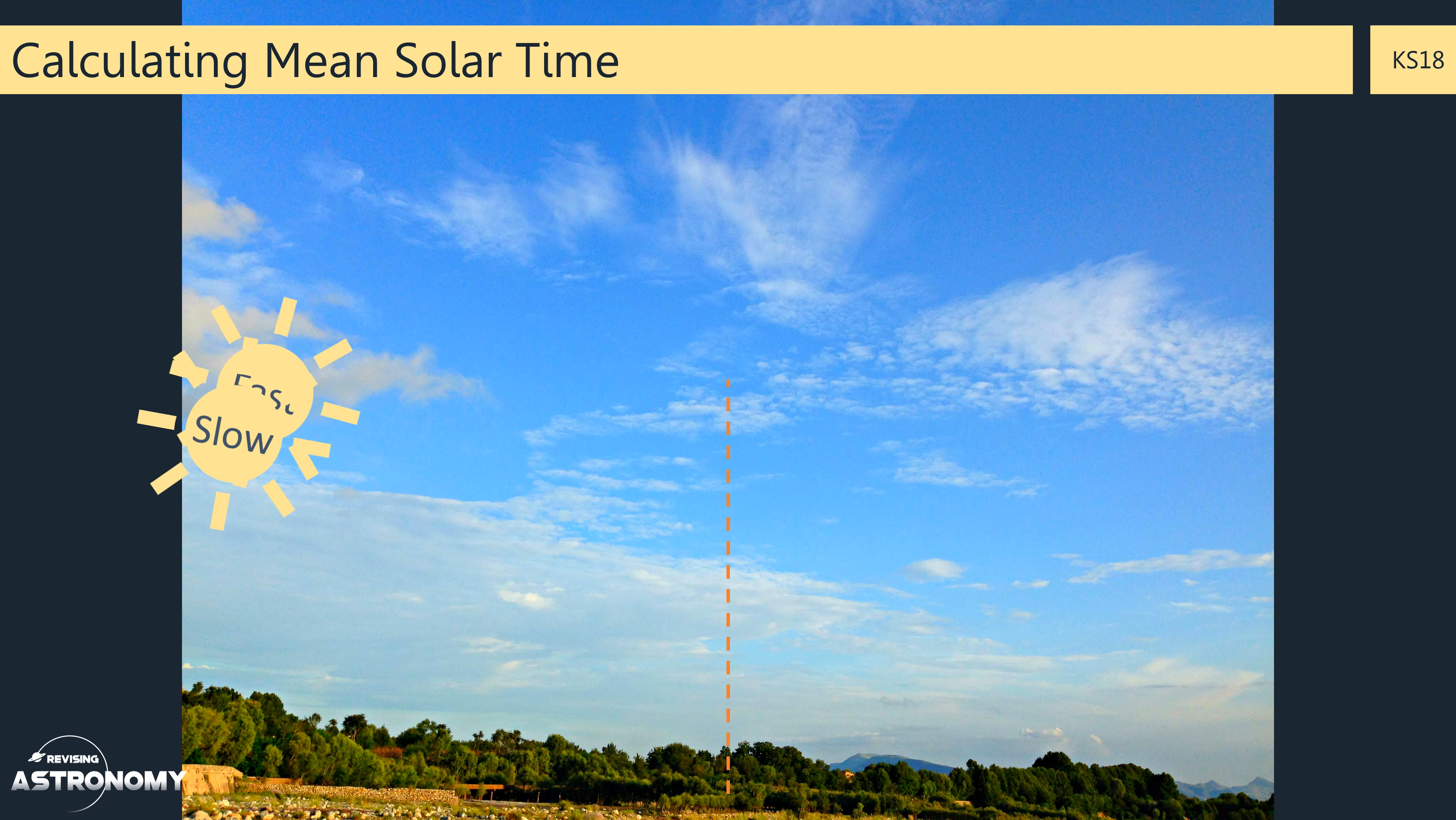Some days it's faster, and some days it's slower. So this would cause a problem when trying to use the Sun to tell the time. If it was fast you'd be early everywhere, and if it was slow you'd be late.